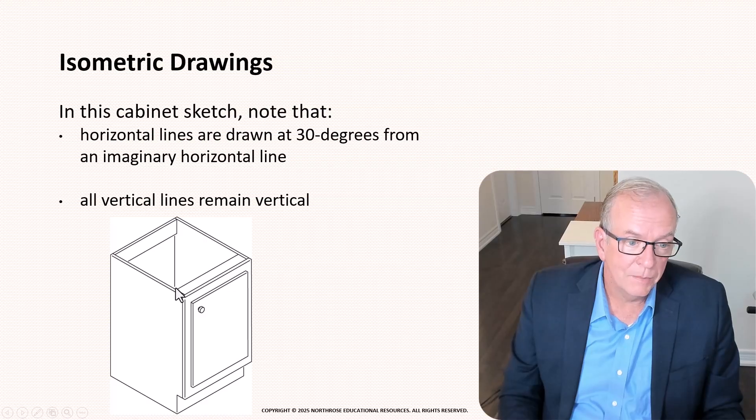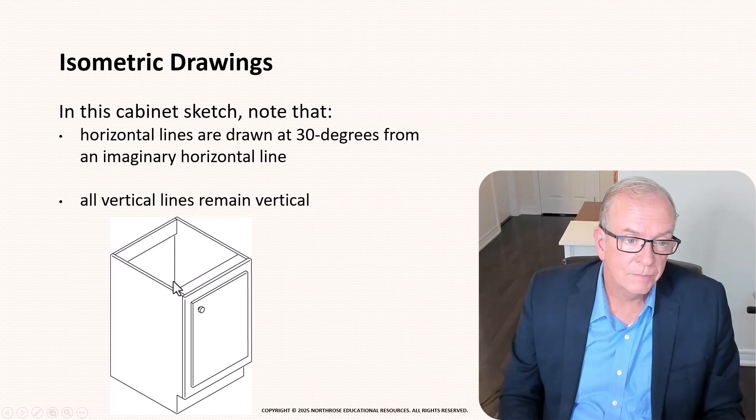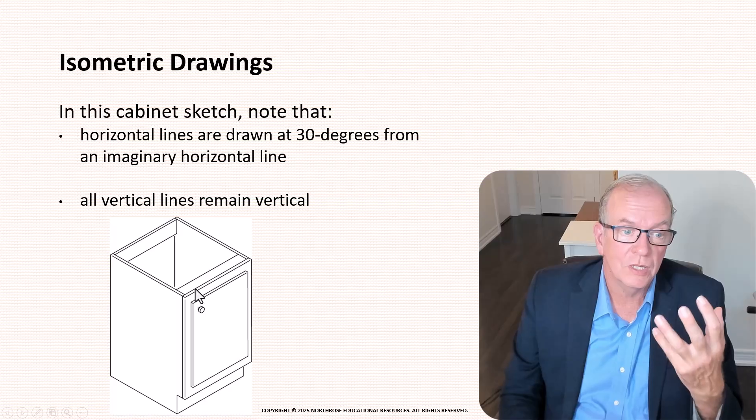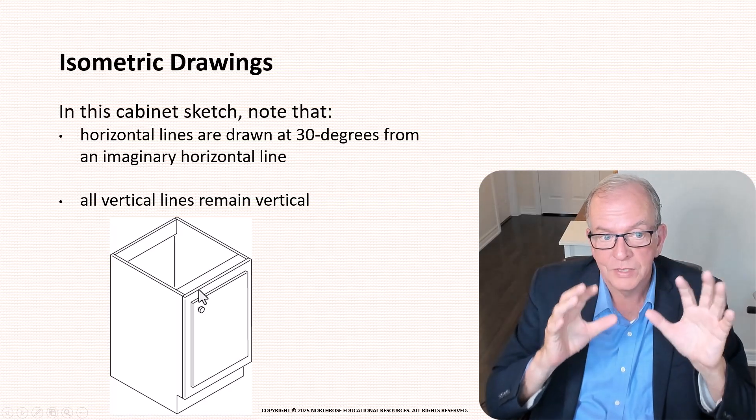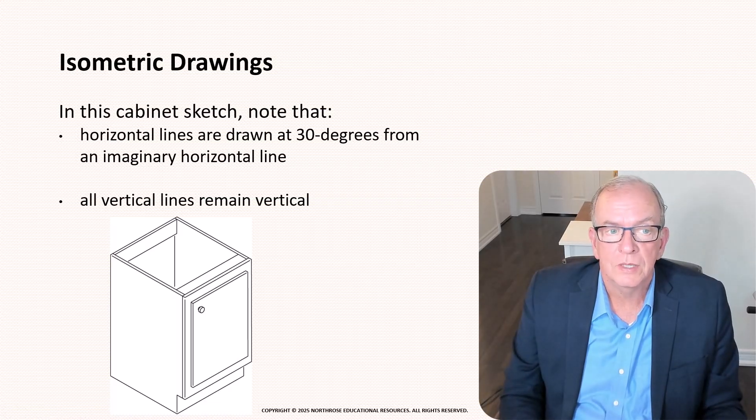But you can very readily see this is a cabinet and you know this looks like it's a square but if you actually did a measurement between here and here you would find that that's basically 120 degrees it's not 90 degrees. But visually the way your mind looks at it it looks like it's basically a square.